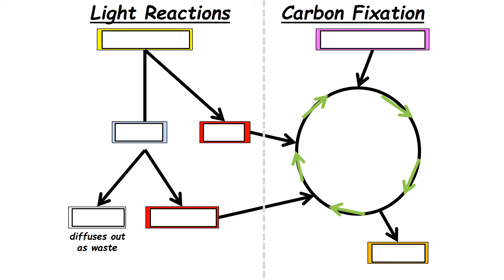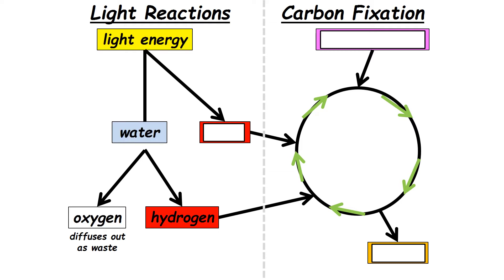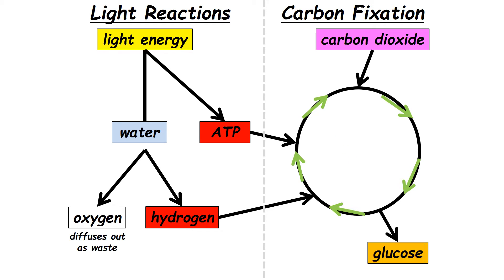Photosynthesis recap: always refer back to the original equation — carbon dioxide plus water produces oxygen and glucose. Light energy converts water into oxygen and hydrogen; it is also converted itself into chemical energy in the form of ATP. ATP and hydrogen then combine with carbon dioxide to produce glucose.